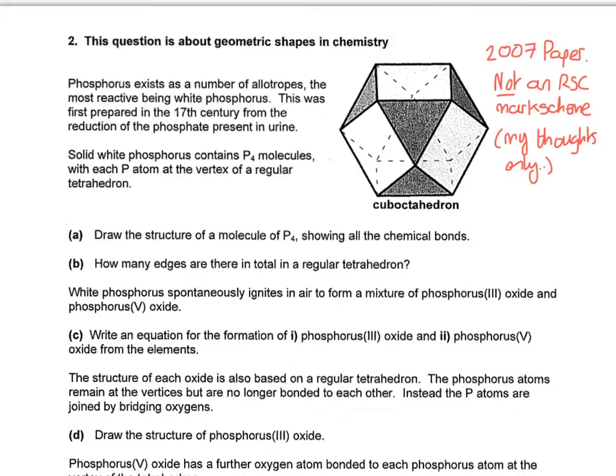So it's obviously talking about phosphorus and it says it's talking about geometric shapes in chemistry. Now geometric shapes in chemistry is not something that's covered at A-level, but it's easily thought through because the geometry that we're talking about is not actually that hard. But it is covered in depth at university chemistry level.